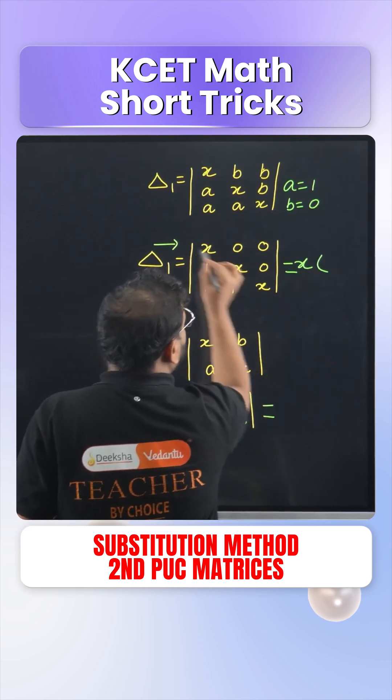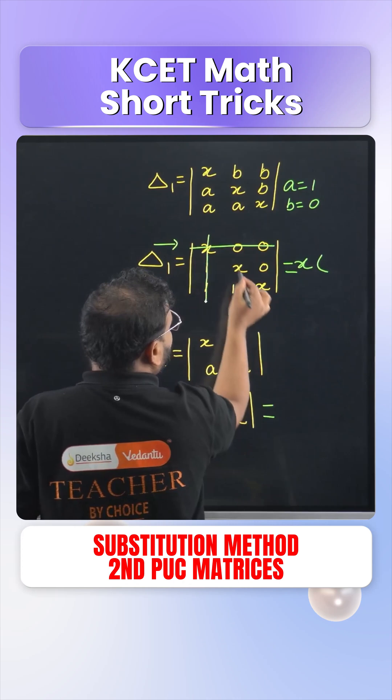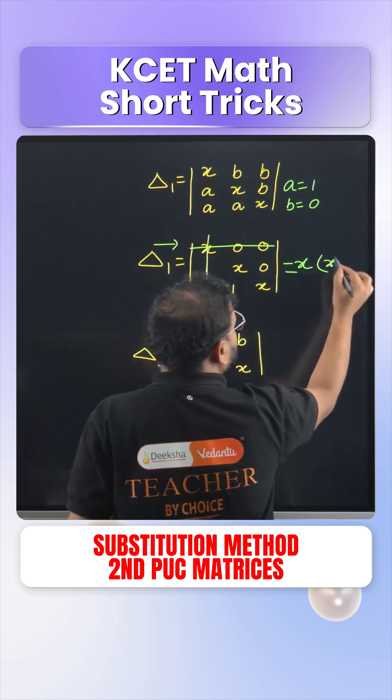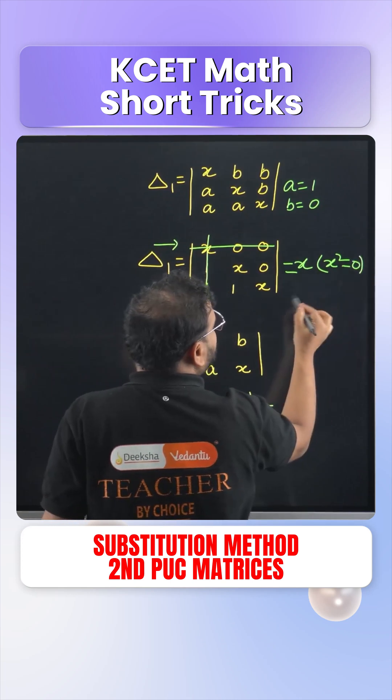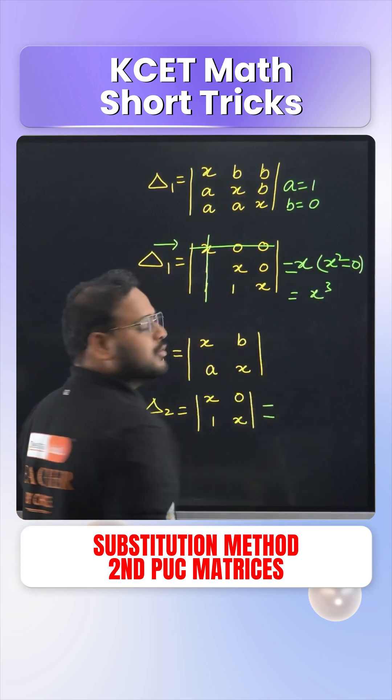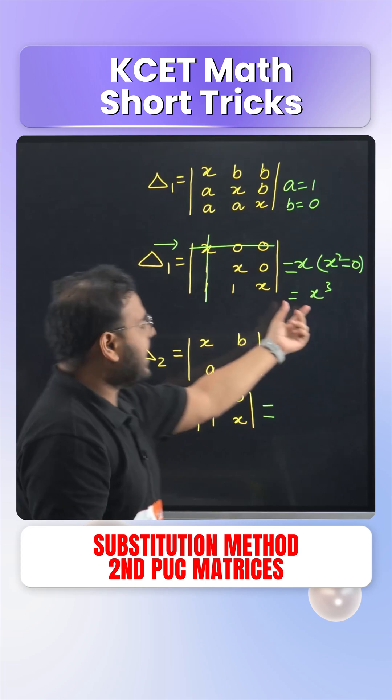It means I have to just find across the X. When I do that, I'll write here X multiple. This will be cancelled out. We'll have only X into X. Simply X square minus 1 into 0. Simply 0 and this gives me X cube. So my determinant 1 is now X cube.